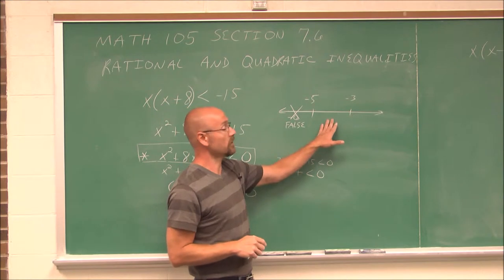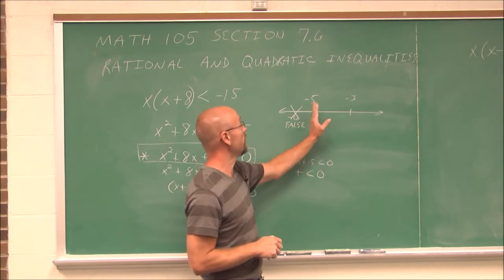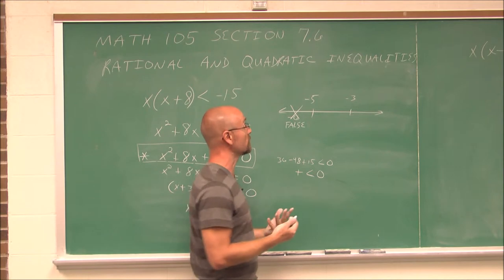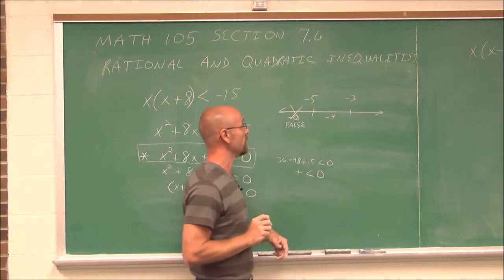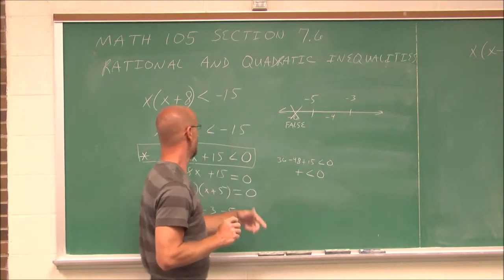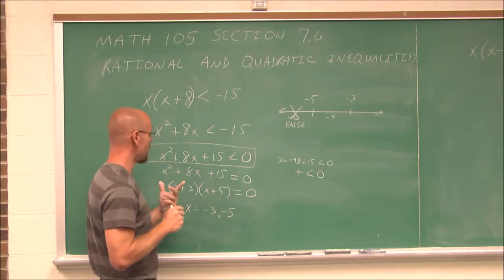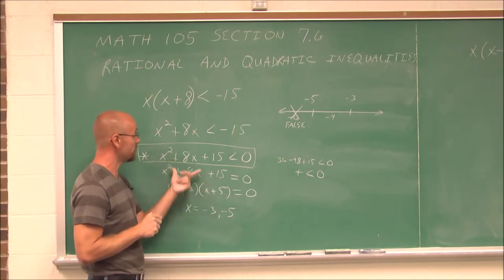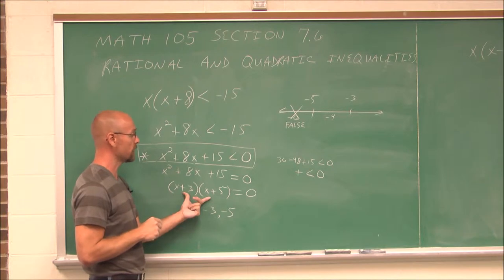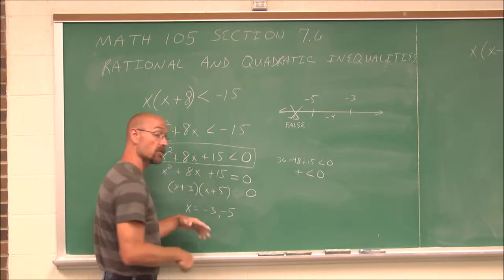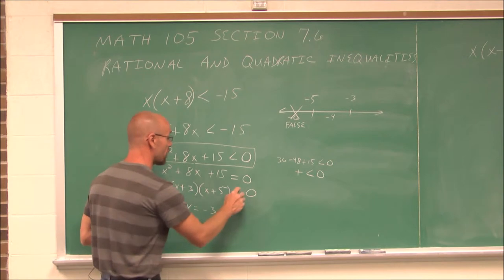Let's test a value within this interval. Between negative 5 and negative 3, there is a nice integer I can use — negative 4. I can go back to this equation, but for time's sake, I'm going to recall that this does factor to this value. So maybe this is a tool you might want to use; otherwise you could just plug it in there.